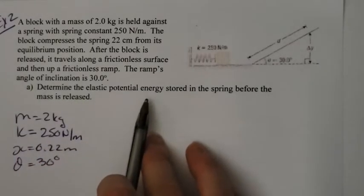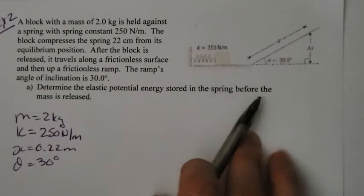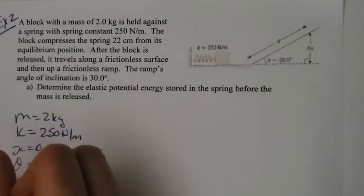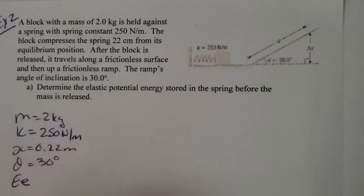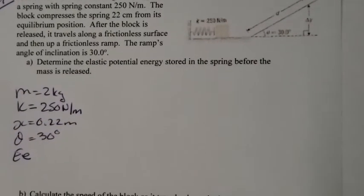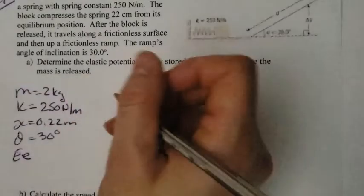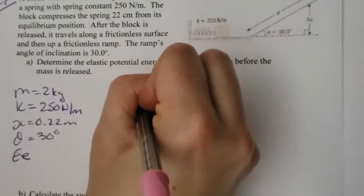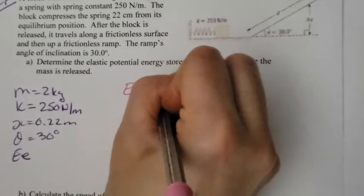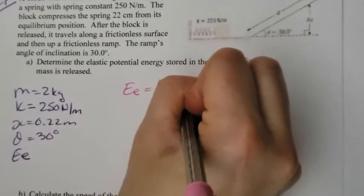We want to find the elastic potential energy stored in the spring before the mass was released. I'm looking for EE. The formula for EE is simple: the elastic potential energy is equal to one-half kx squared.